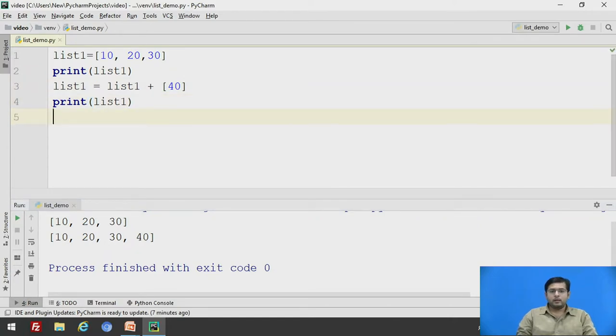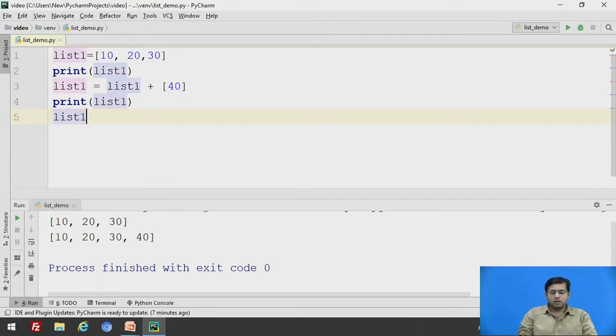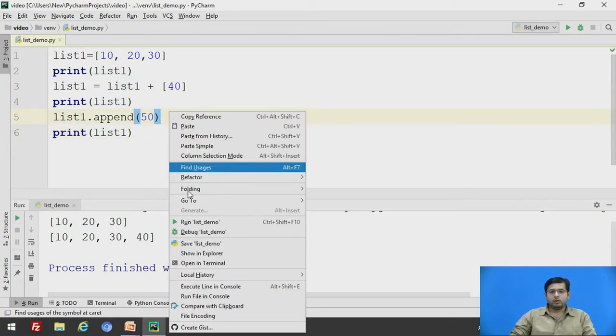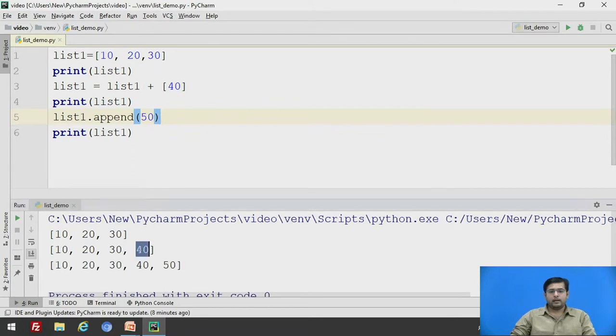Now, we will see append function. To append function, you have to call the variable list1 dot append, and you will say 50. Using append function, the element will be by default added to the end of the list. And now, we will print this, so that we can get an output. Now, you will see all the three outputs, creating of list, updated the list by adding an element using concatenation operator, that is plus operator. And this is by append function.